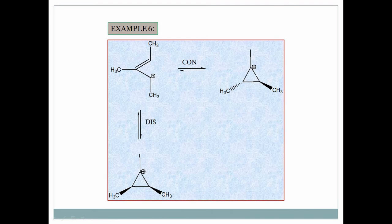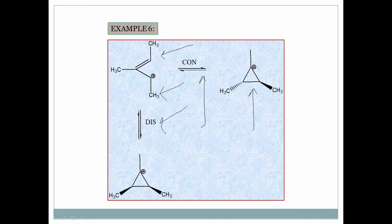Now we come to the 2 pi electron system, performing both con and dis electrocyclization. Both methyl groups are on opposite sides. In con-electrocyclization, opposite methyls come to opposite sides in the product. In dis-electrocyclization, opposite methyls come to the same side in the product.